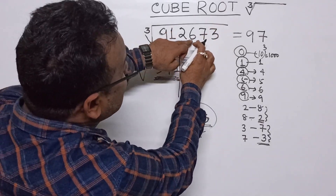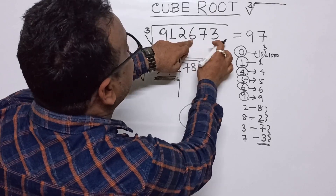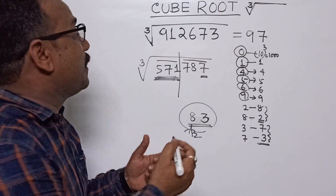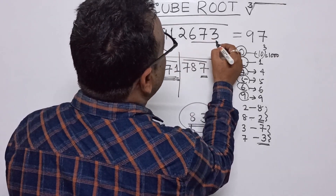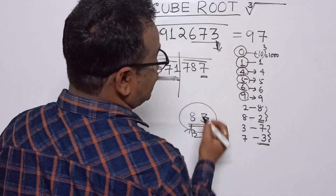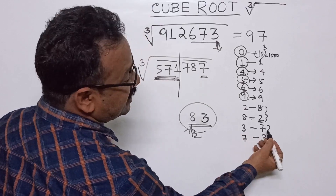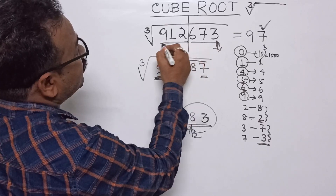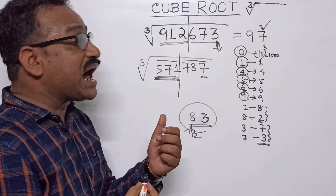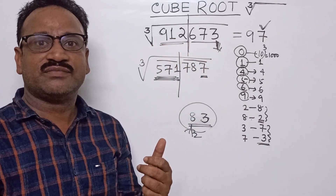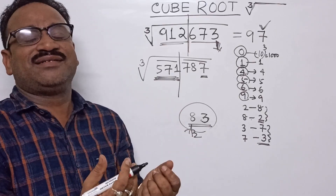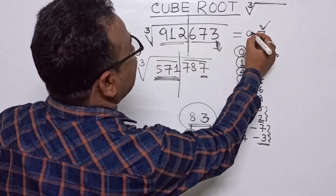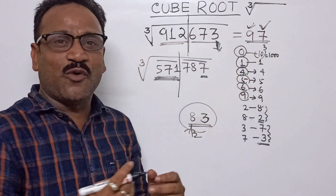Now cube root of 912673. Last digit is 3 — 3 means 7 will come as the unit digit. The remaining group is 912. 9³=729, and 912 is greater than 729 but less than 1000 (which is 10³). So we write 9. Therefore cube root of 912673 = 97.